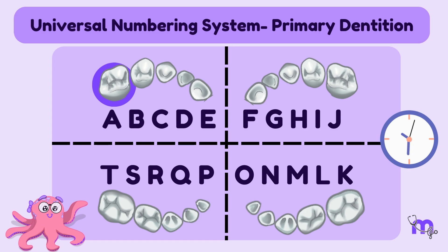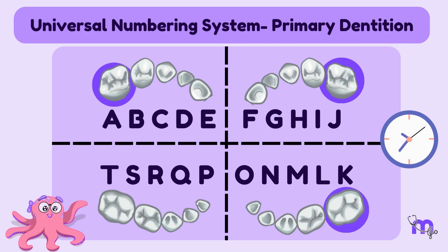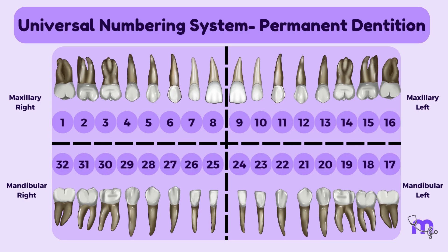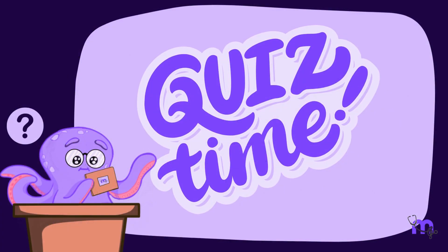In primary dentition, uppercase letters from A to T are used. It follows a clockwise sequence starting with the right maxillary second molar, denoted by the letter A, then continues towards the left maxillary second molar, to the left mandibular second molar, and finally concludes at the right mandibular second molar, represented by the letter T. The permanent dentition is numbered in the same sequence from one to thirty-two, where number one denotes the right maxillary third molar and number 32 denotes the right mandibular third molar.